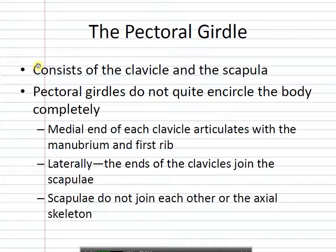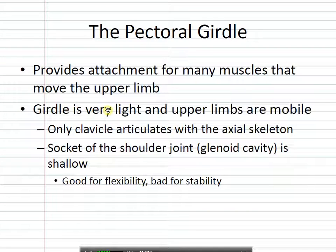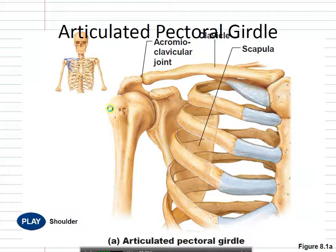Your shoulder blade is actually free-floating. If you have someone lie face down and bring their arm back, you can slide your hand underneath their scapula into the muscle — you can wiggle your hands way in there. The pectoral girdle has two bones: the clavicle and the scapula. We'll talk about the scapula first because it's great for using those anatomical terms — it has a lot of bone markings.